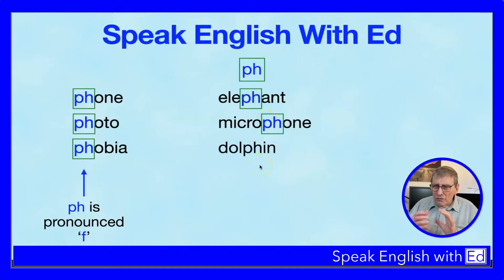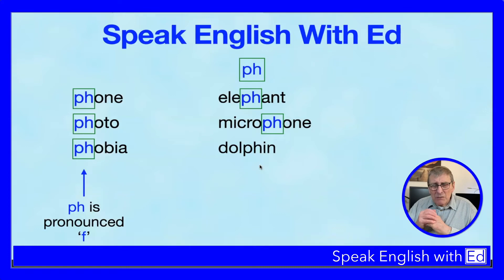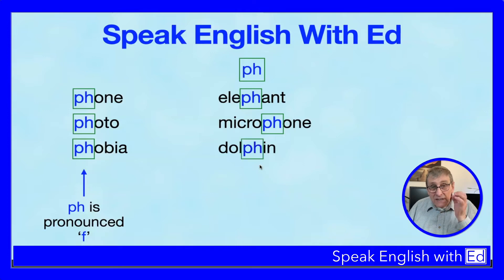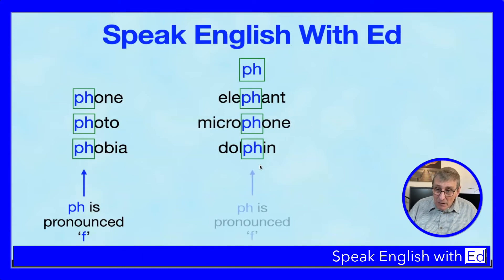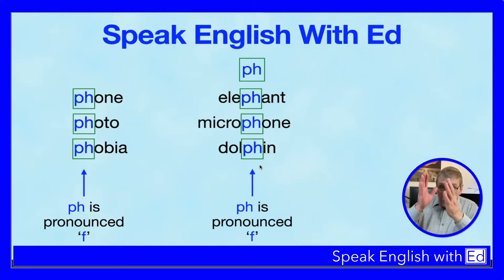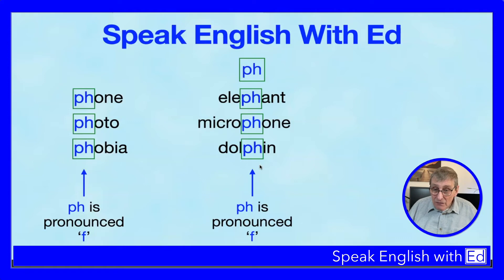Here's another one — dolphins. Beautiful animals. Have you ever swum with dolphins? The PH is in the middle of the word 'dolphin,' and it's pronounced with an F, just the same as all the others. So all these words with PH in the middle — elephant, microphone, dolphin — are all pronounced with an F. They're all the same.